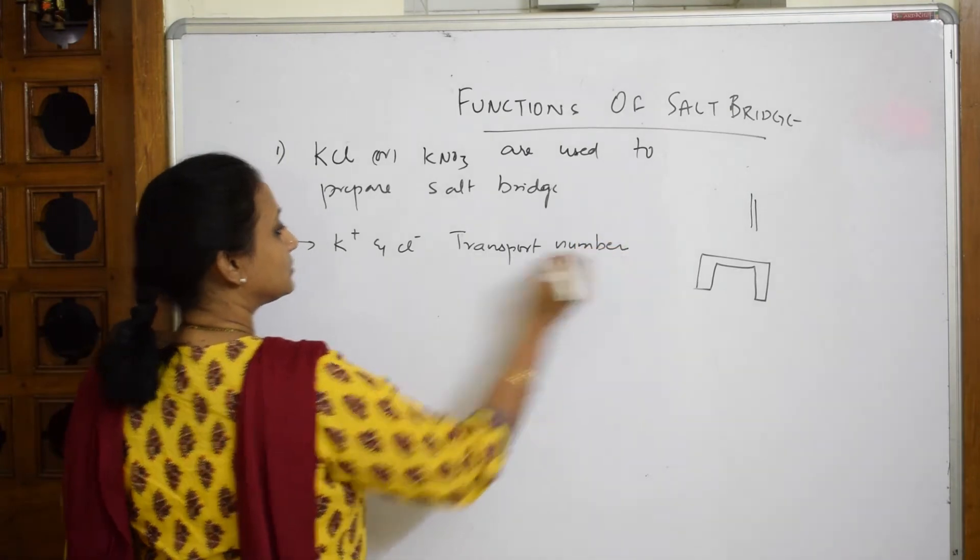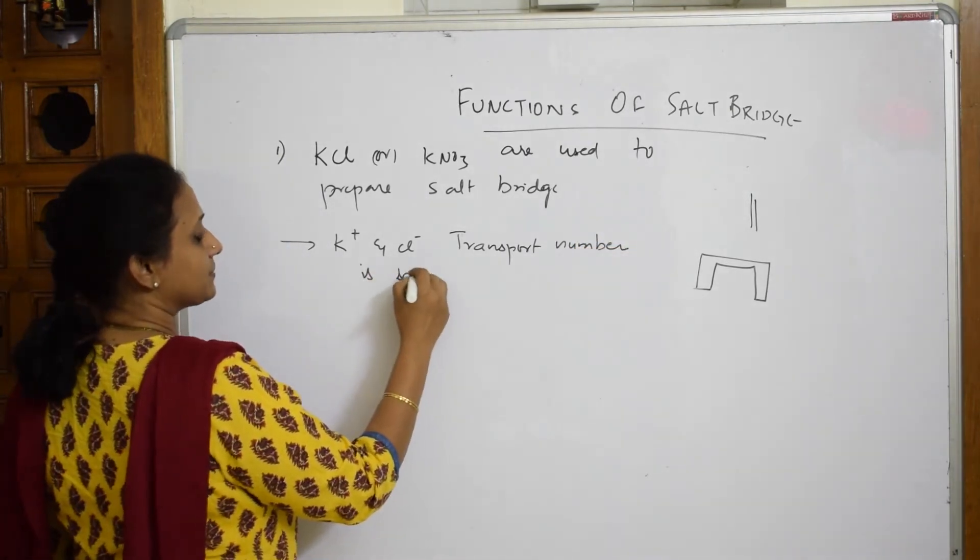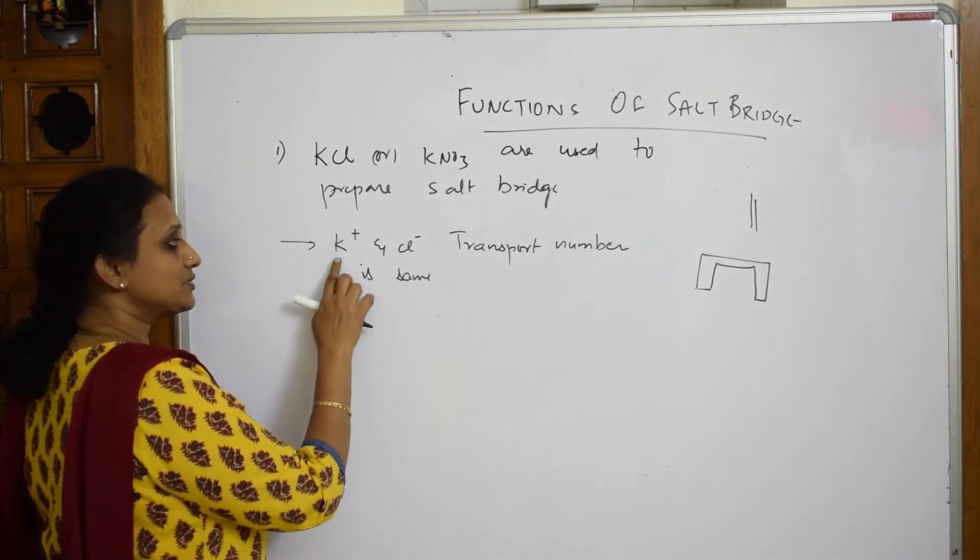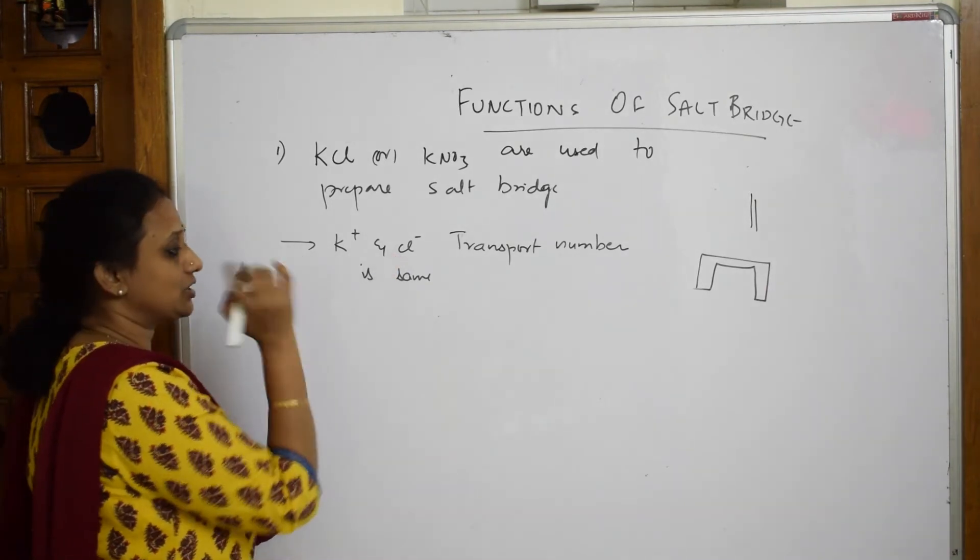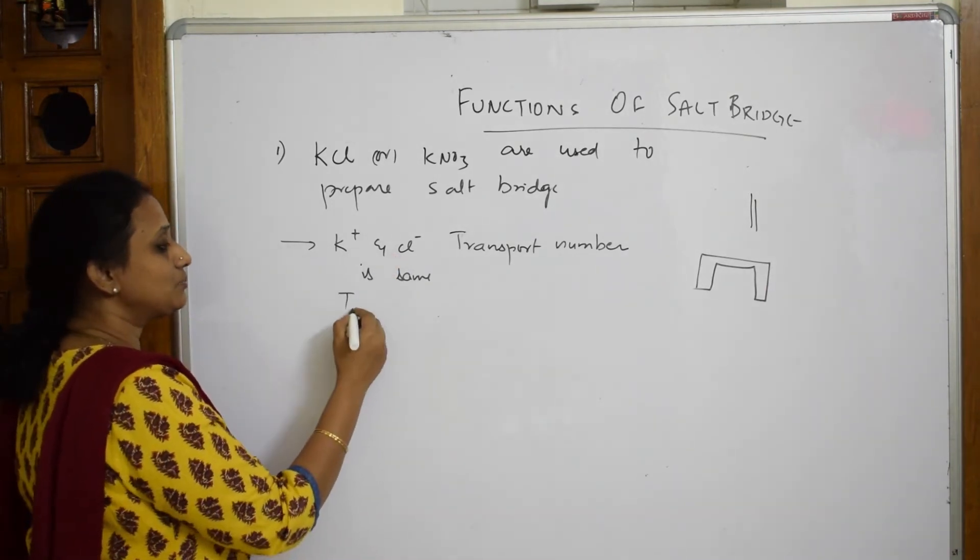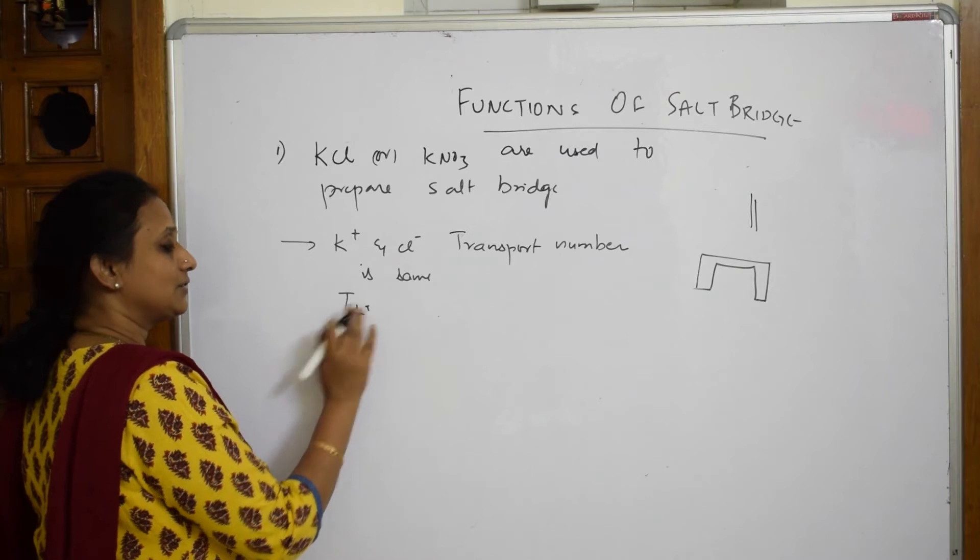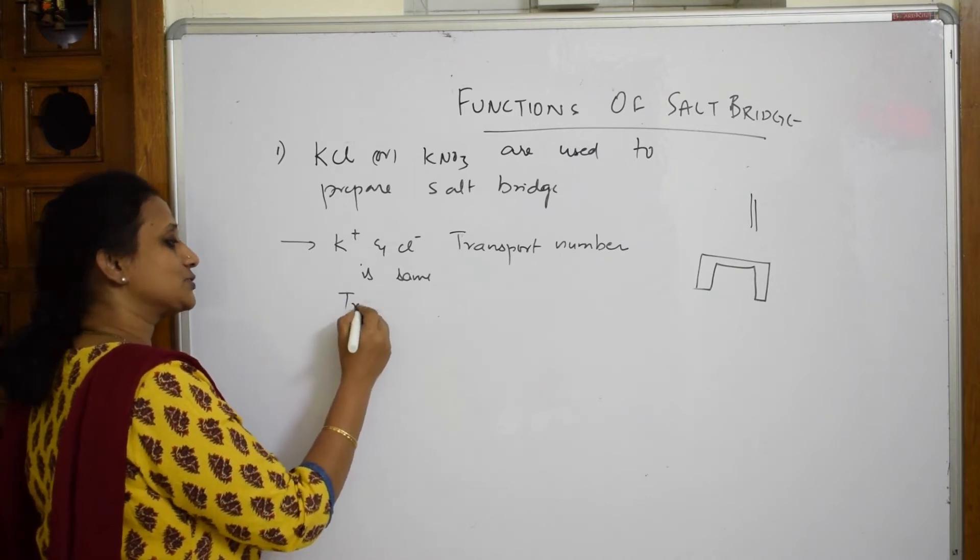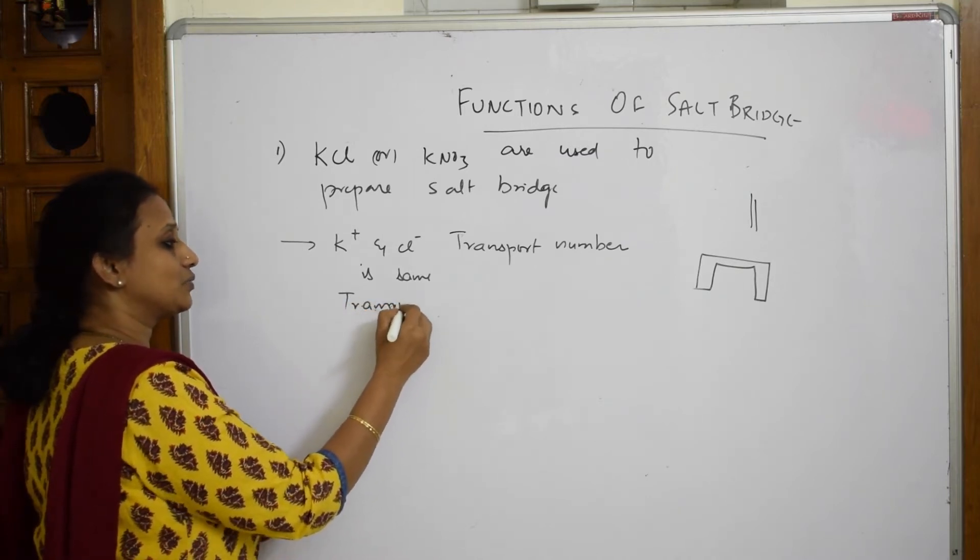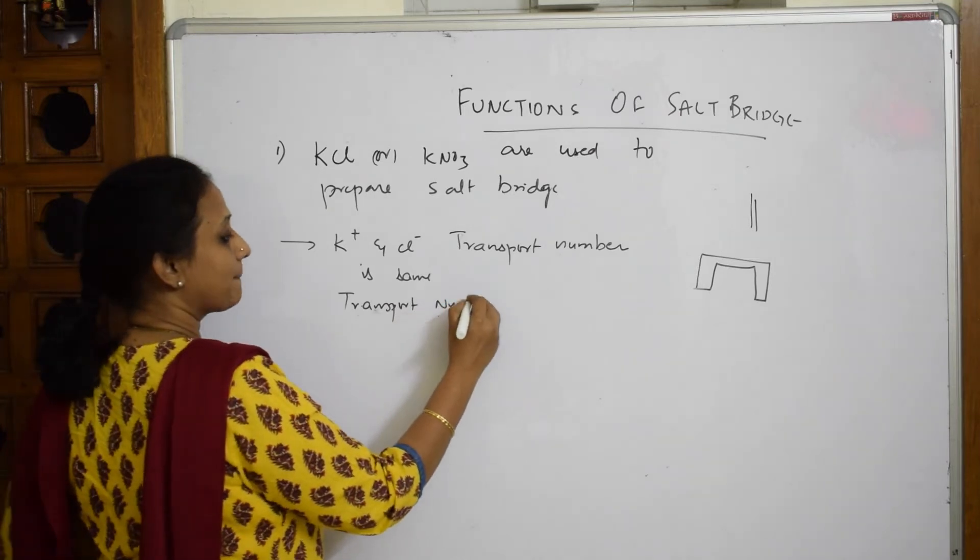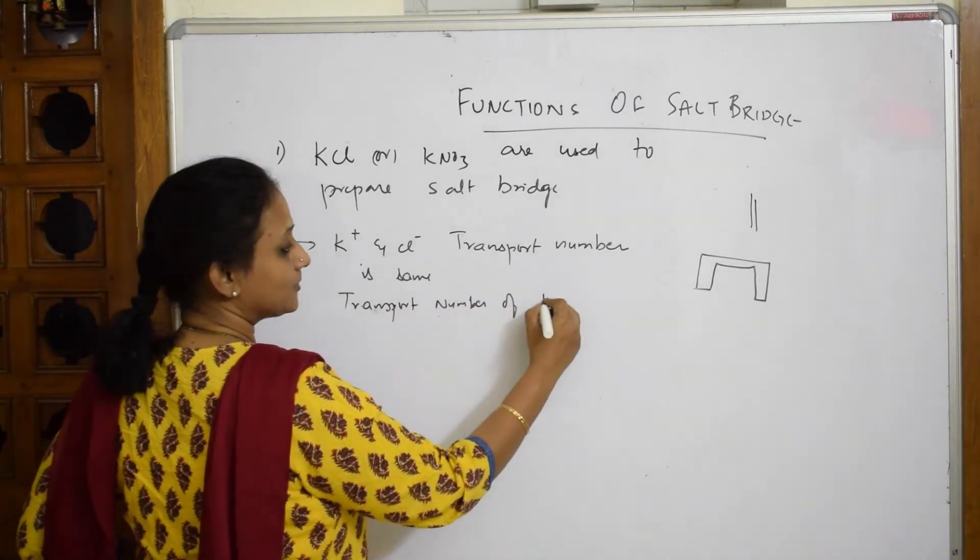What is transport number? Let us see. Suppose if I take this - this is a cation, this is anion. Now if I say transport number of the cation, if I have to take, let us take transport. If I will not introduce that term now, only transport number of cation is equal to...